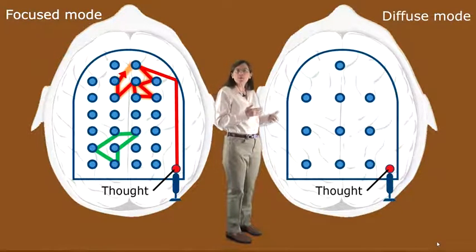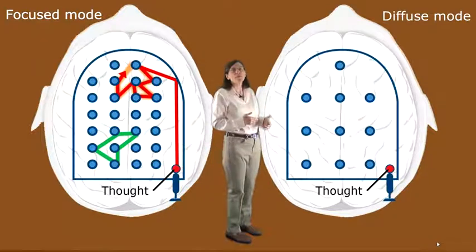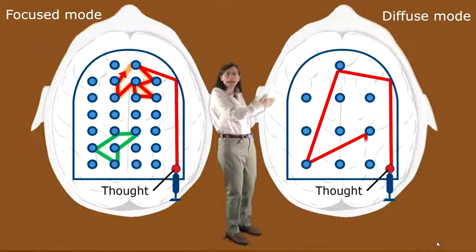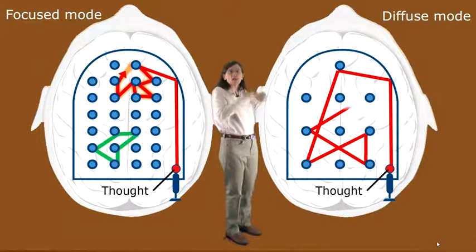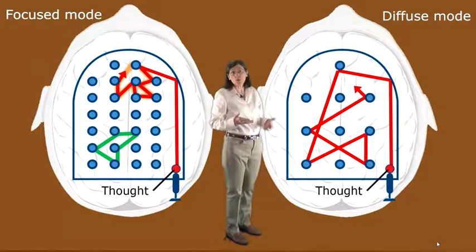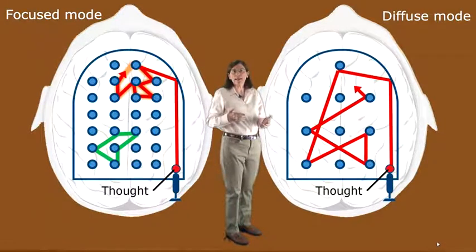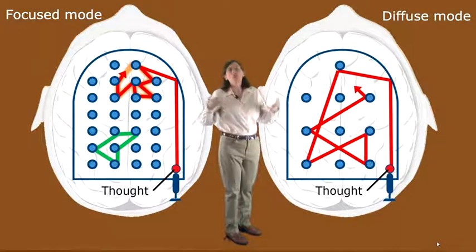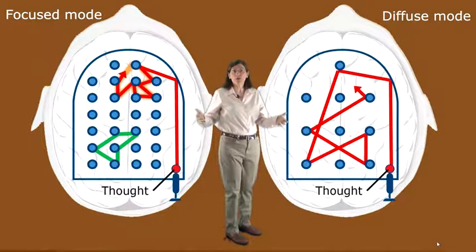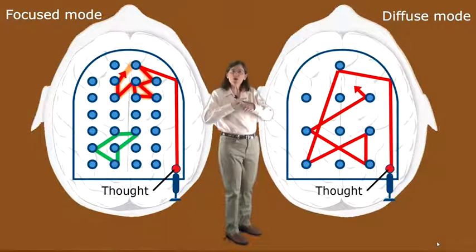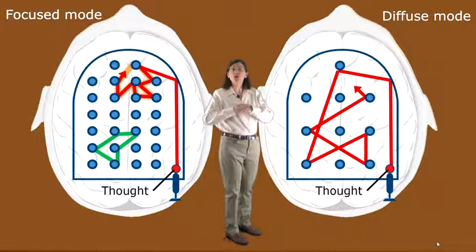Look at how widely spaced the rubber bumpers are. Thought takes off. Look at how it moves widely, bounces around. It can travel a long way before being interrupted by hitting a bumper. In this diffuse mode of thinking, you can look at things broadly from a very different, big picture perspective. You can make new neural connections traveling along new pathways.